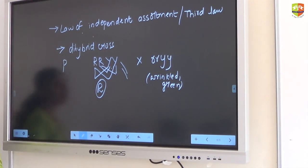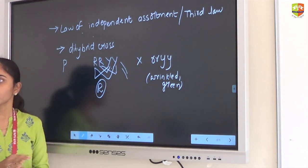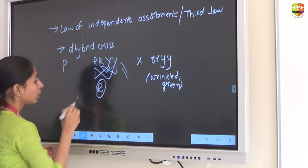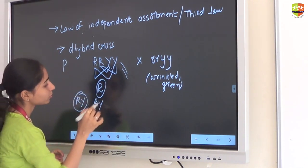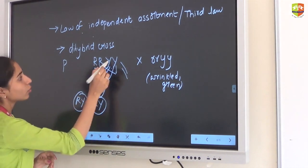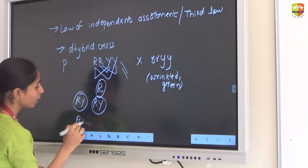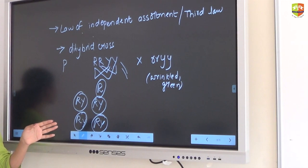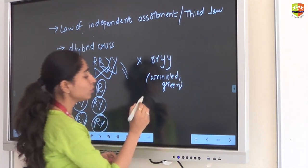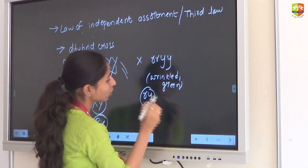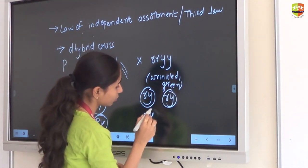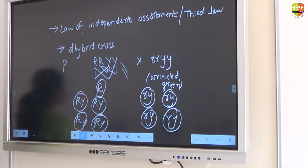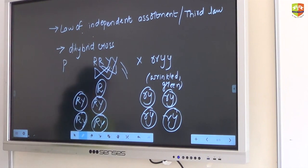Practically, when we have four separate alleles, we will get four different gametes also. They are assorting independently, independent of each other. Each allele is not depending on any other allele.